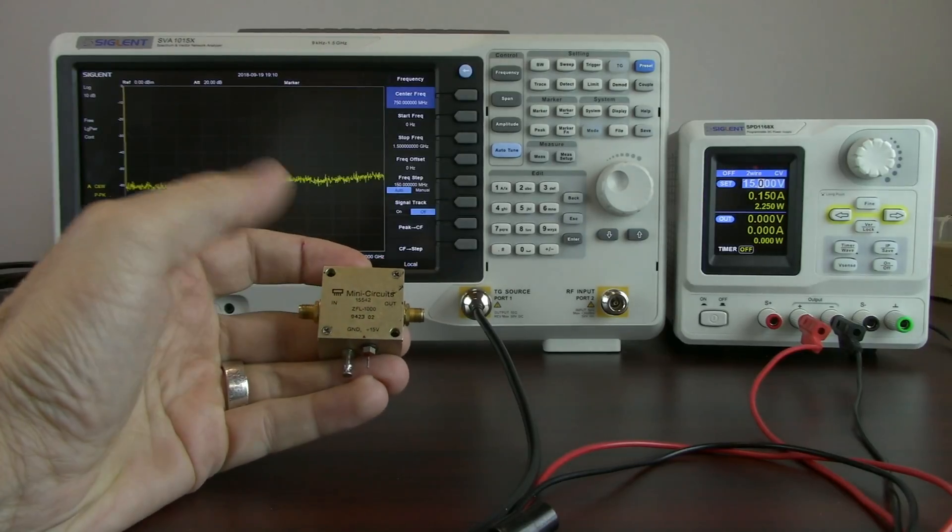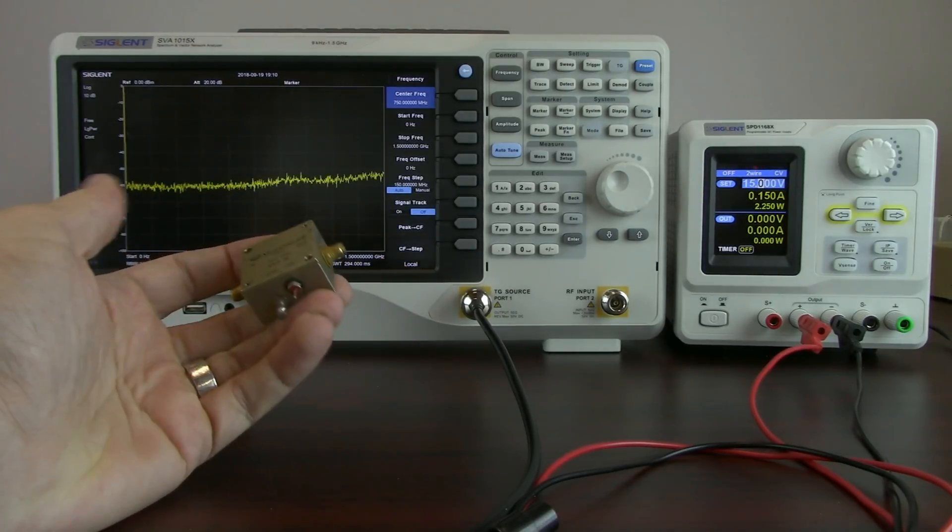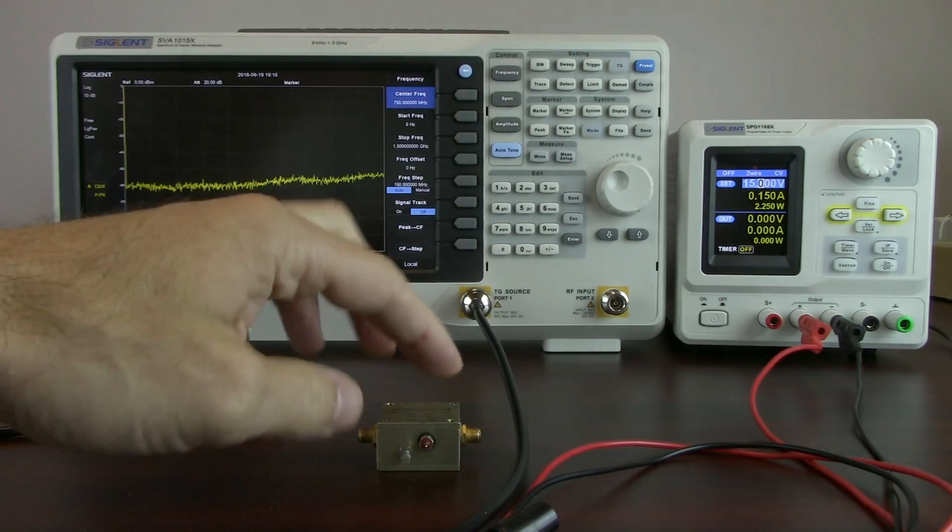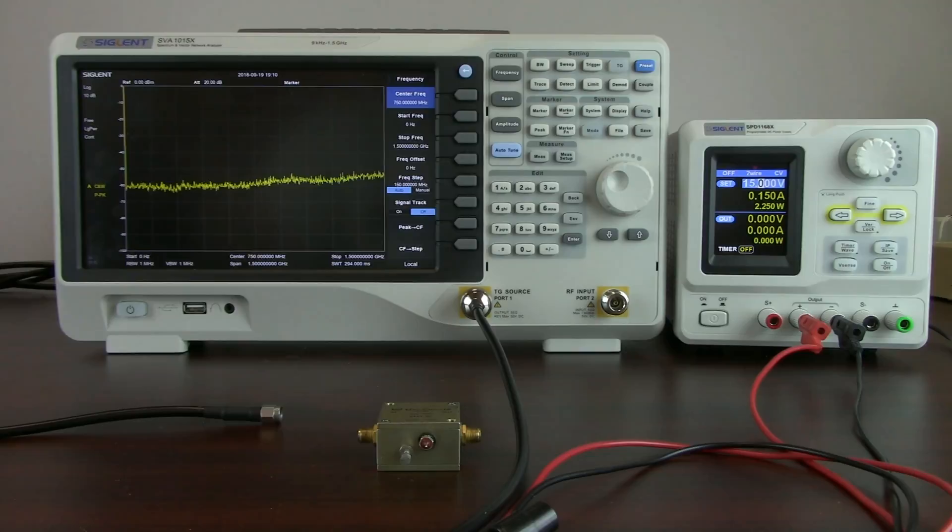So a larger impedance difference is going to have a larger reflection if it's a higher impedance. So if we go from low impedance to high impedance we'll get larger reflection and we can measure that ratio of the input versus the output and calculate the VSWR from that. That's also known as the reflection coefficient.